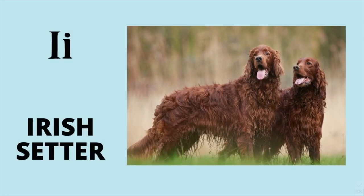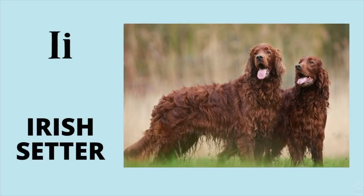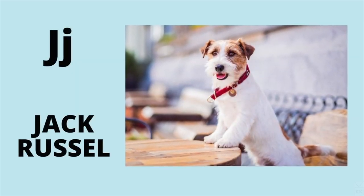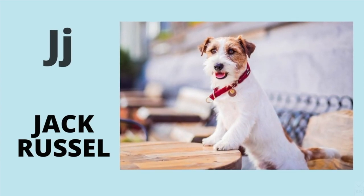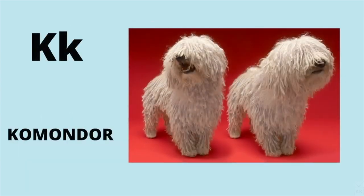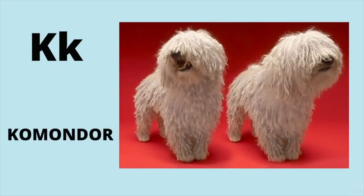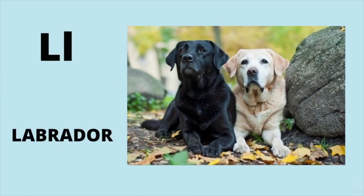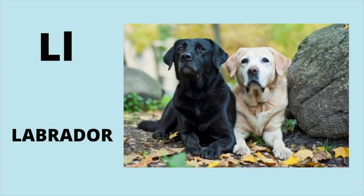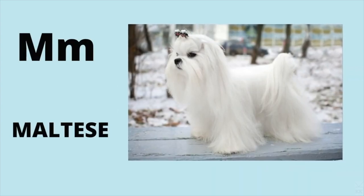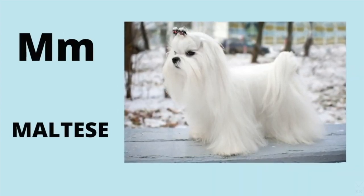I is for Irish Setter. I, Irish Setter. J is for Jack Russell. J, Jack Russell. K is for Komondor. K, Komondor. L is for Labrador. L, Labrador. M is for Maltese. M, Maltese.